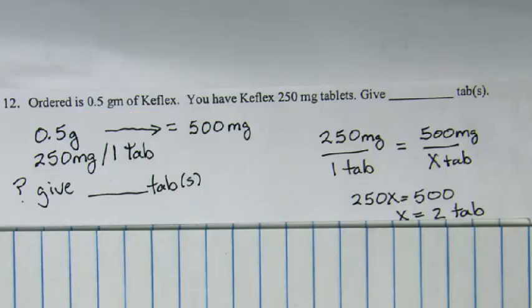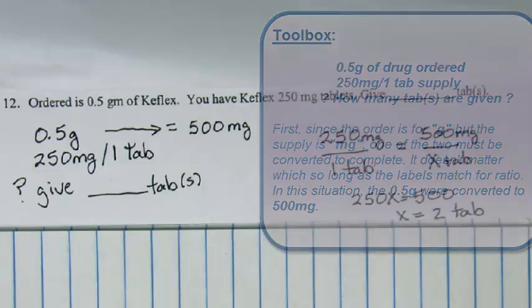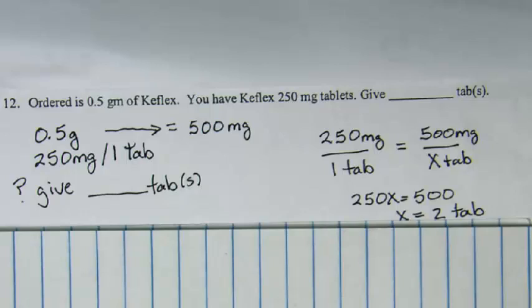In the next question, the order is 0.5 grams of Keflex; you have Keflex 250 milligram tablets — give how many tablets? Our toolbox has 0.5 grams as what is ordered, 250 milligrams per one tablet as the supply, and the question of how many tablets. Note: because what is supplied and what is ordered are in two different forms, we will convert first before putting it into a ratio and proportion problem.